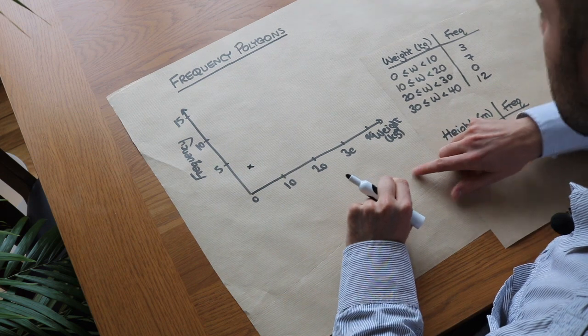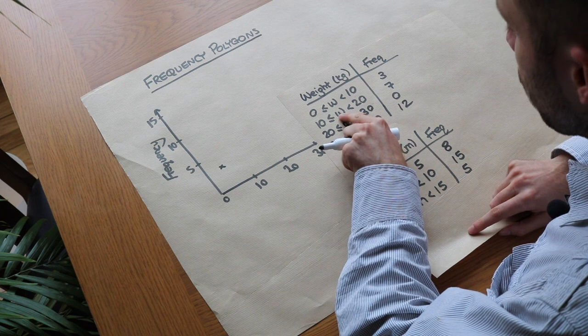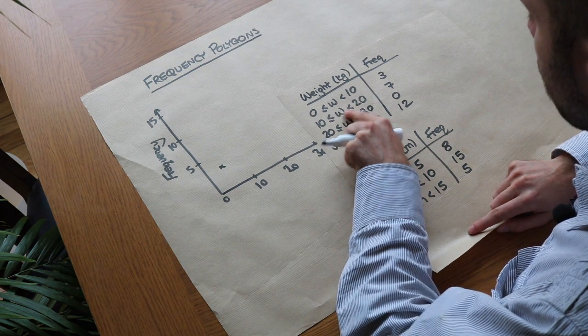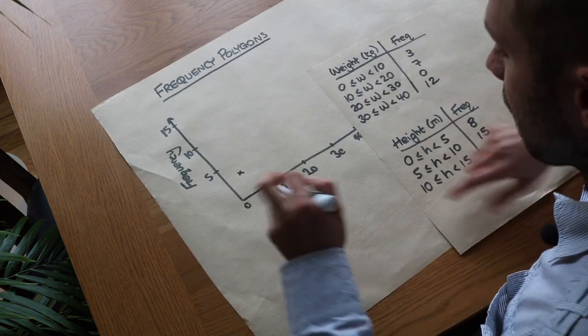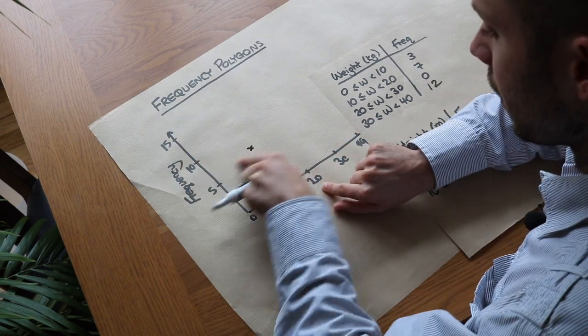And then we do the same for the next interval, so we use the midpoint of 15 kilograms to represent that group—15 with a frequency of 7. So 15's here, frequency of 7, roughly there.